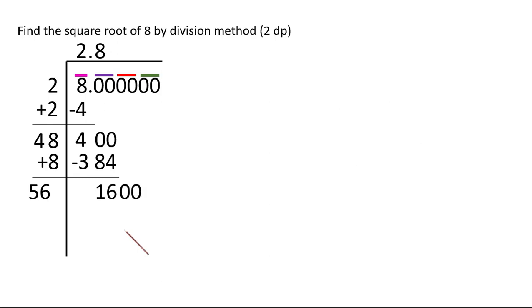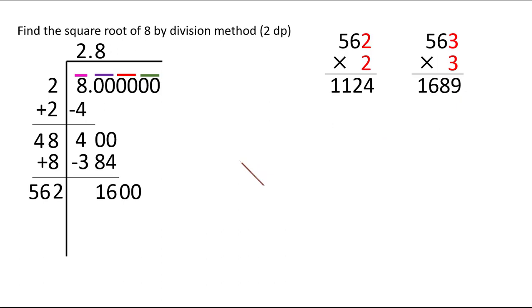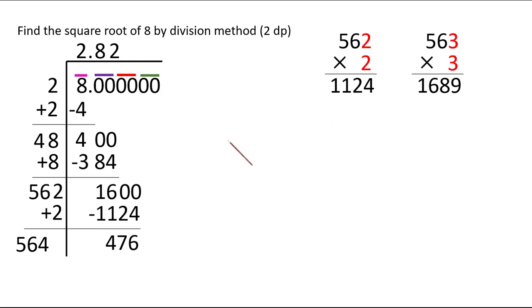Bring two more zeros down. We now need a digit after 56 such that multiplying by the same digit gives 1600 or less. 562×2=1124; 563×3=1689 which is bigger than 1600. So 562×2=1124 works. Subtract to get 476. Add 2 to get 564, leaving some space.